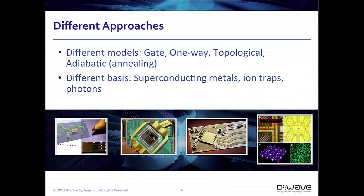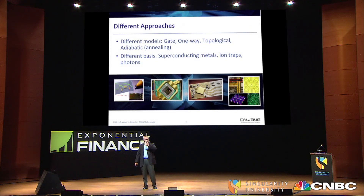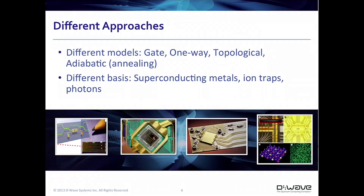There are different ways to build quantum computers, and people have been trying for about 20 years. The model we chose is called the adiabatic model — it's a mouthful, and the theory comes from MIT. It was published in a paper in 2000 by Ed Farhi and other scientists at MIT. What we've done at D-Wave is actually implement that technology. We chose to use superconducting electronics — very low temperature electronics — and the chip runs down at that very low temperature.